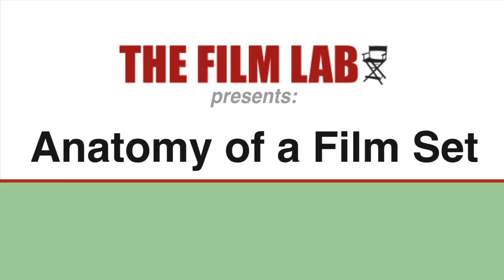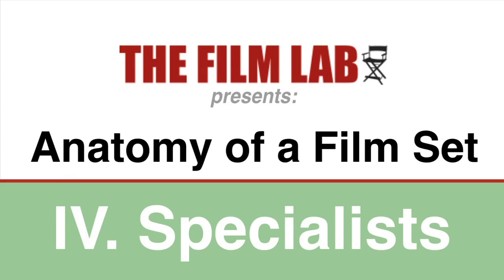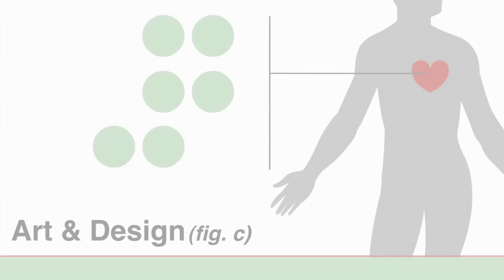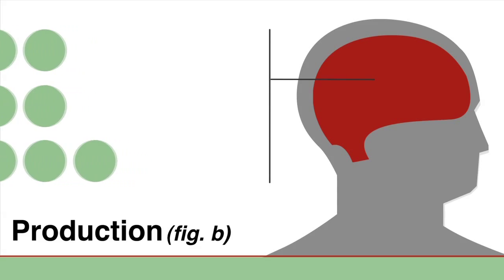Welcome to the Film Lab's Anatomy of a Film Set series here on TheSubstream.com. You are currently watching part 4 of 4. Over the course of this video series, we've taken a look at the different departments within a film crew and how they function on set during the production of a film.